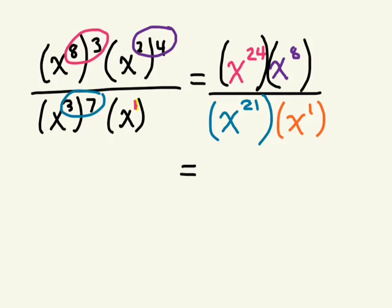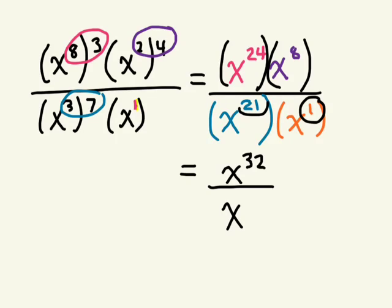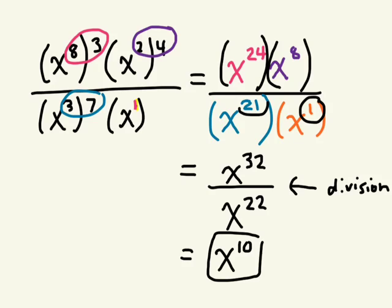What operation is in the numerator? We're multiplying powers, so we add the exponents: 24 plus 8 gives x to the power of 32, divided by x to the power of — adding 21 plus 1 — x to the power of 22. Now we have division, so we subtract: x to the power of 10, and that's the final answer.